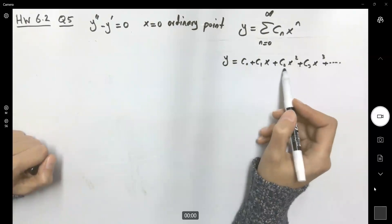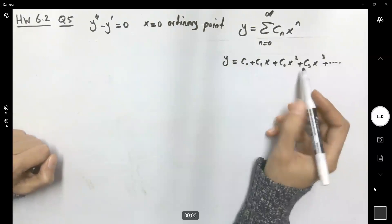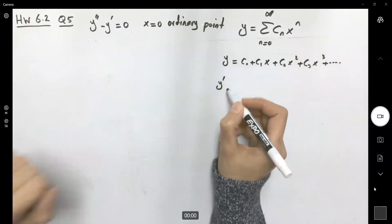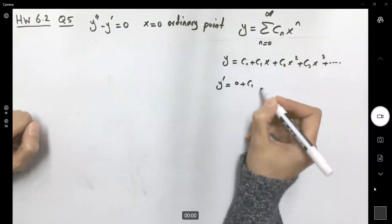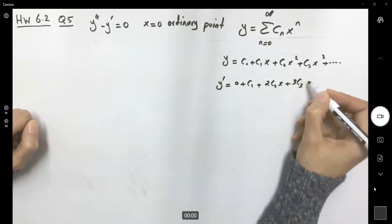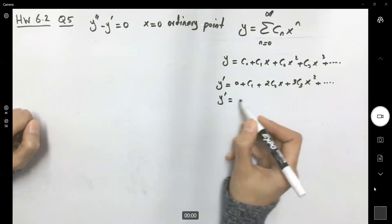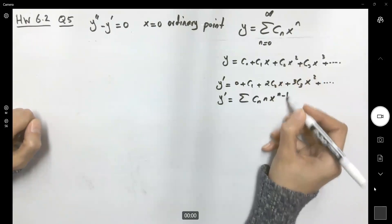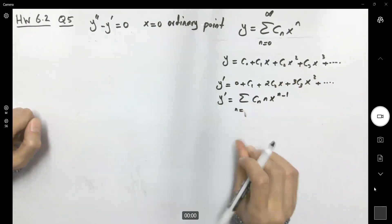Our job is to identify the behavior of these coefficients. Let's take the first derivative — we need both the first and second derivatives. The first derivative is zero plus c_1 plus 2c_2 x plus 3c_3 x squared plus the rest of the terms. So y prime equals the sum of c_n · n · x to the power n minus one, with n starting from one to infinity.